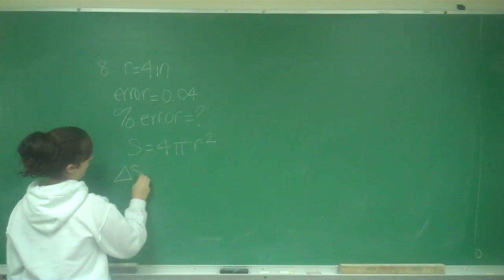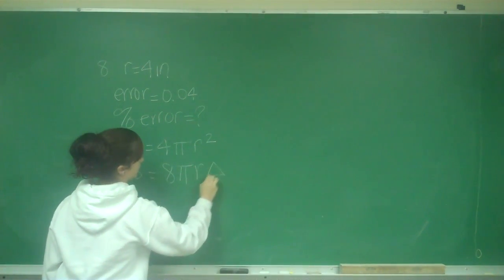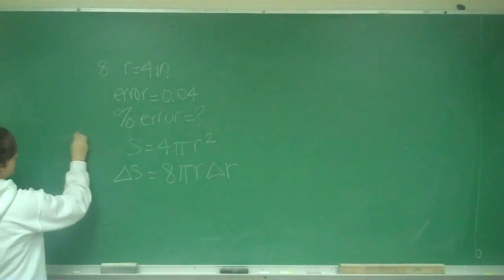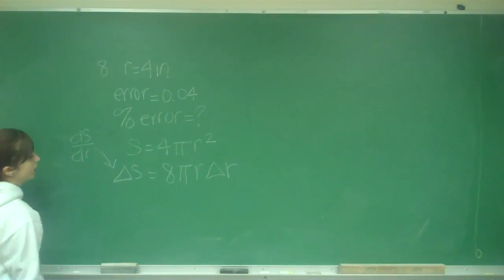So I have delta S, and then this is the derivative, 8 pi R times delta R. You might also see this as dS, dR. Same thing.